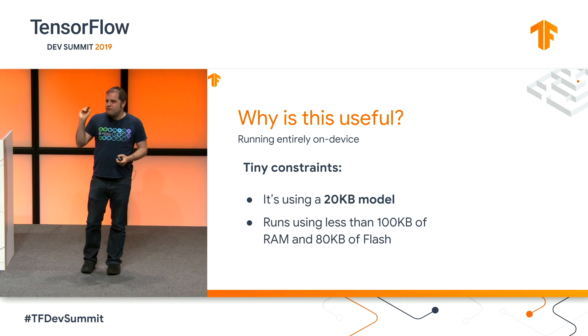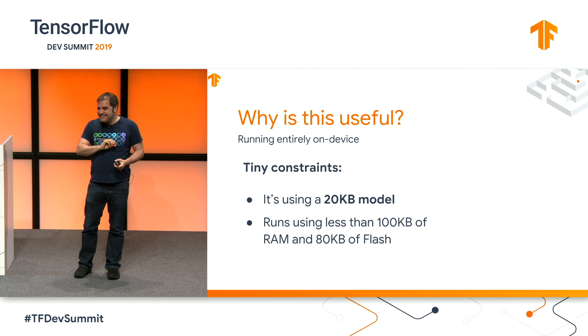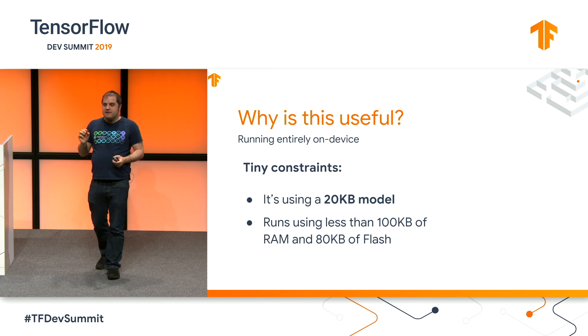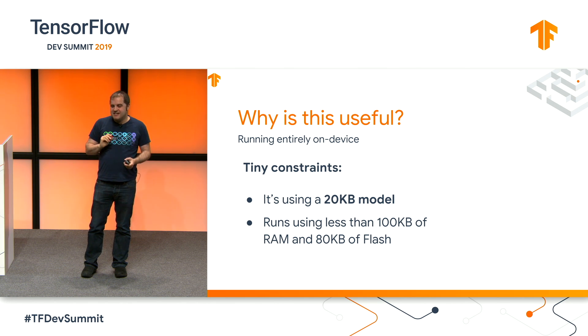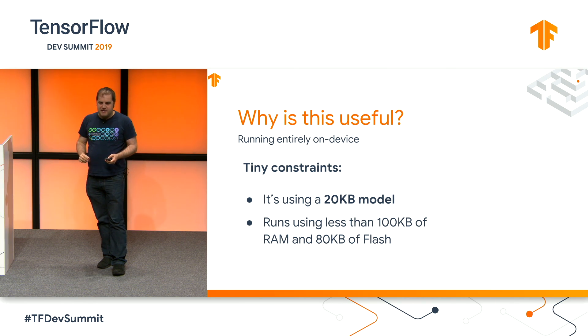So why is this useful? First, this is running entirely locally on the embedded chip, so we don't need any internet connection — making it a useful first component of a voice interface system. The model itself isn't quite 13 kilobytes, but it is down to 20 kilobytes. It only takes up 20 kilobytes of flash storage on this device. The footprint of the TensorFlow Lite code for microcontrollers is only another 25 kilobytes, and it only needs about 30 kilobytes of RAM to operate. So it's within the capabilities of a lot of different embedded devices.